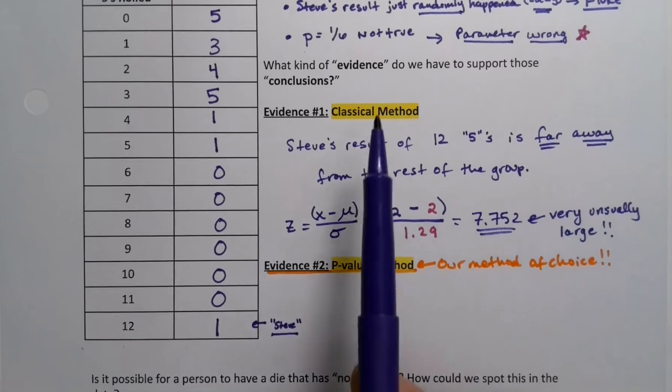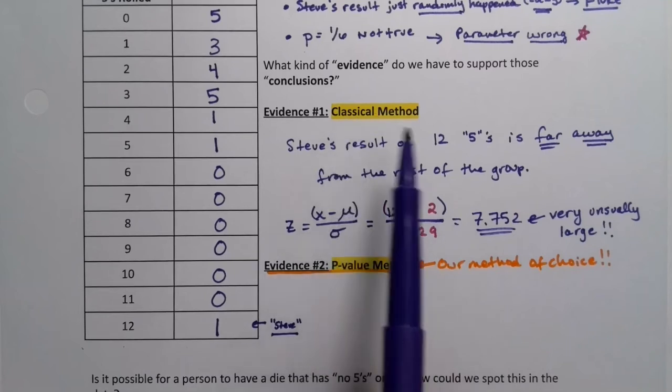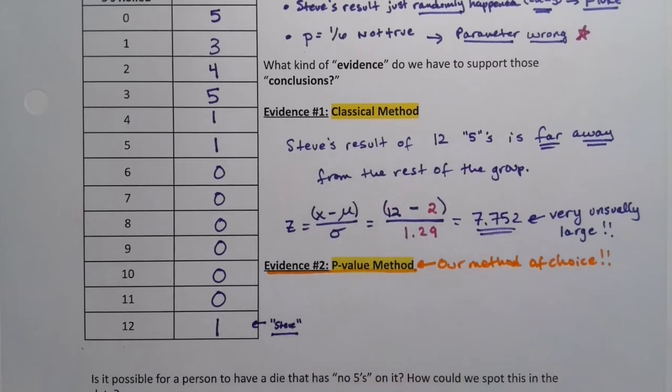The z-score method, the classical method, is classical because it's kind of older. This is a method that was used before the invention of calculators. There are some people that still like it for very good reasons, but we're going to shy away from that method and stick with the p-value method.